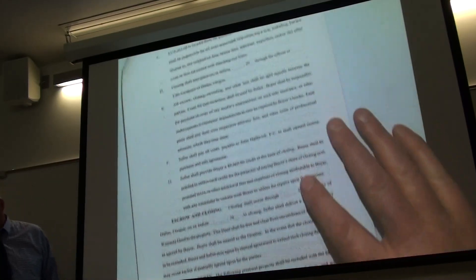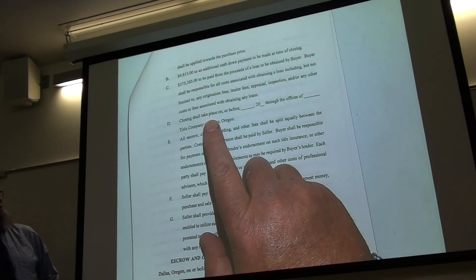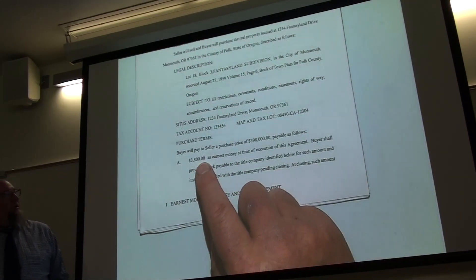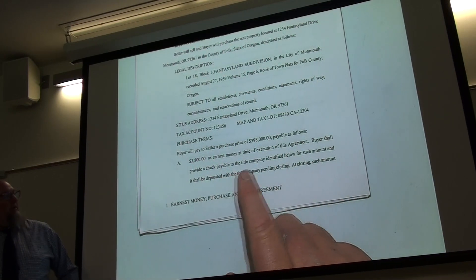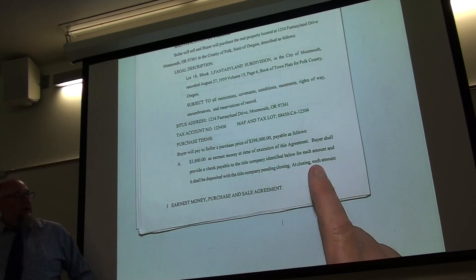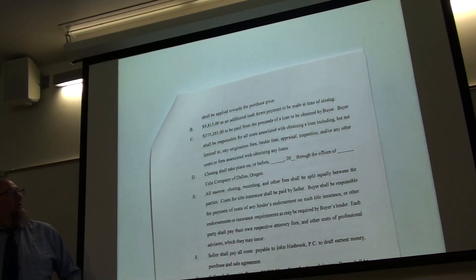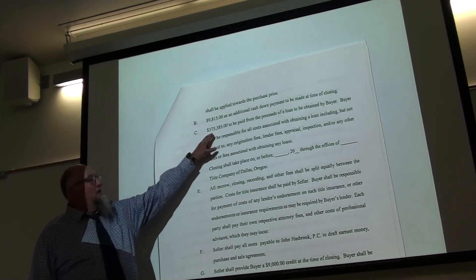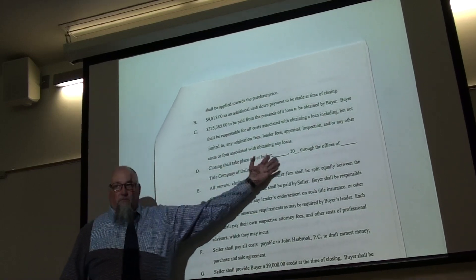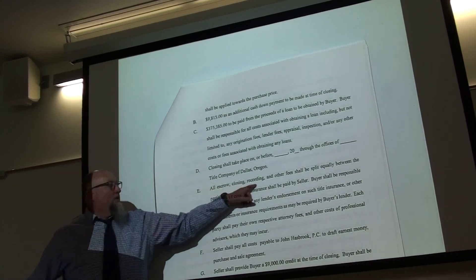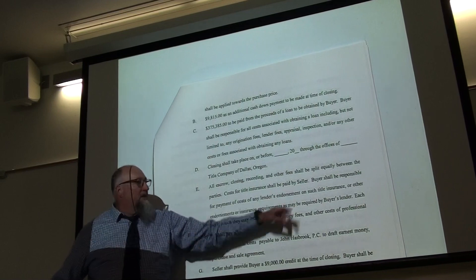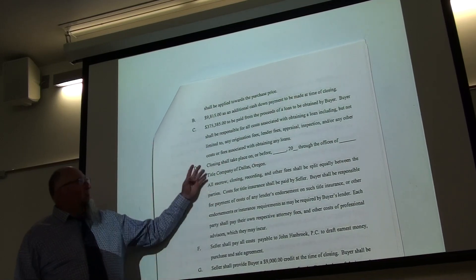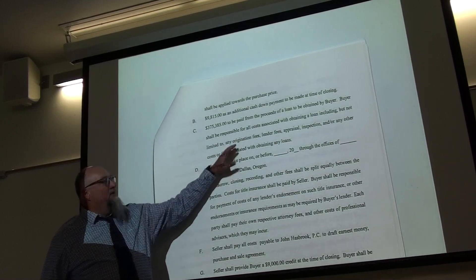On the next page you identify the title company and the closing date. Back on page one, you specify the amount of earnest money — the buyer provides a check payable to the title company, which is deposited and applied toward the purchase price at closing. You then outline the remaining terms: additional cash down payment, loan amount, closing date, title company, and that all closing and recording fees are split equally, with title insurance paid by the seller.